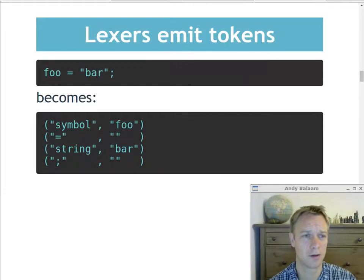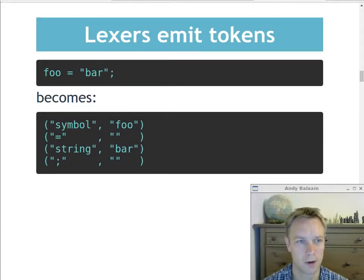Finally, the last token in that bit of source code is a semicolon, which again is one of these things that has its own type. So semicolon is the type, but it has no contents. Notice that the quotes have been removed from bar, so the contents of the token bar is just B-A-R. We know it's a string because its type is string.